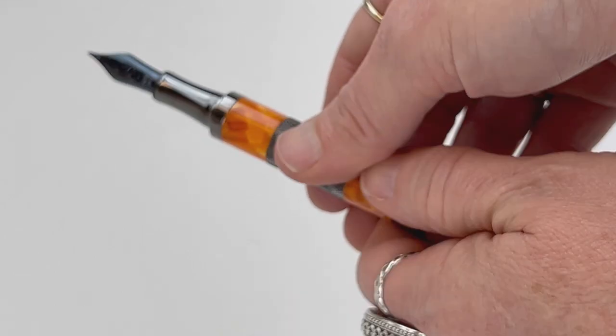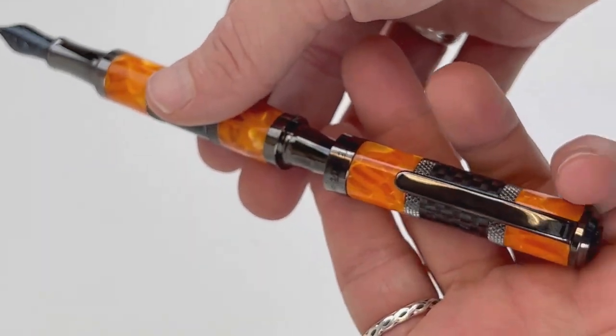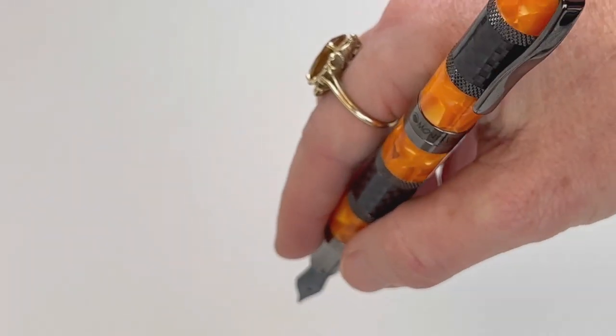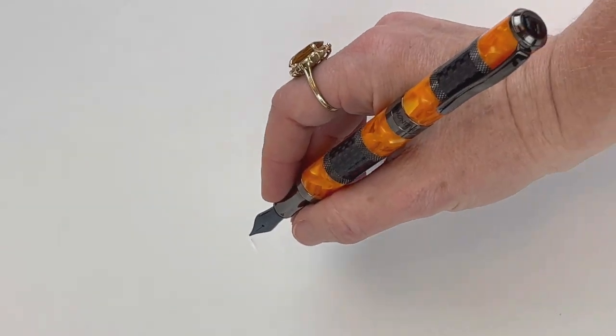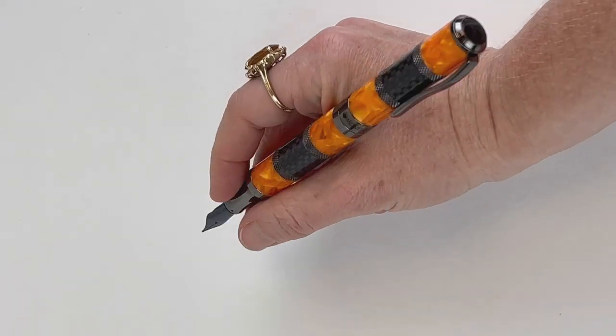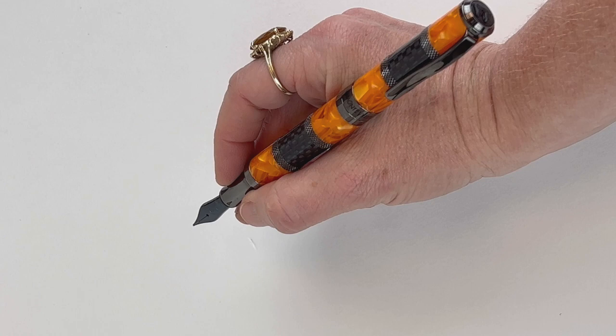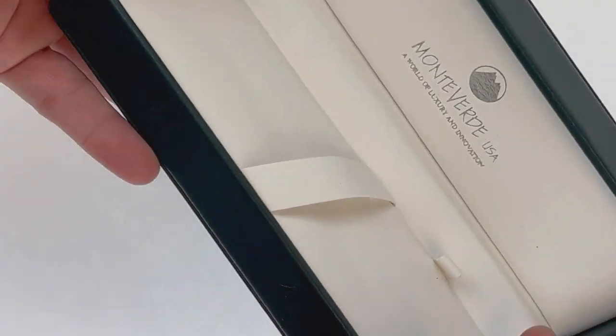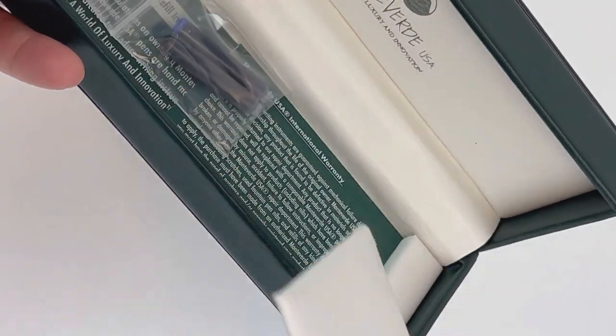And just for those who are curious, frequently asked question: yes, the Monteverdi Regatta fountain pen is a little bit of a heavier pen. A lot of people like to use it unposted if they're used to a lighter weight pen. The weight is about 1.75 ounces.